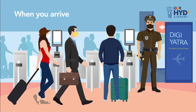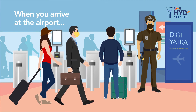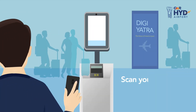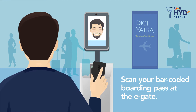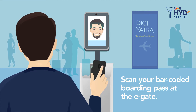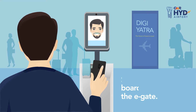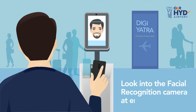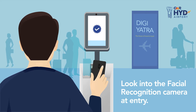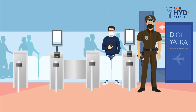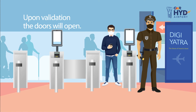When you arrive at the airport, scan your barcoded boarding pass at the E-gate. Look into the facial recognition camera at entry. Upon validation, the doors will open.